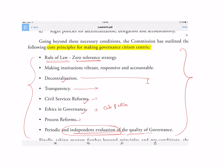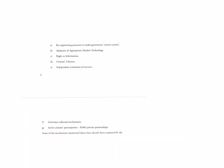Remember this framework: rule of law, zero-tolerant strategy, make institutions vibrant, responsive and accountable, decentralization, transparency, reforms, ethics, process reforms, and periodic and independent evaluation. Any question that comes to you with regard to good governance, participation, and anything - just remember this framework and you can present the answer. The practical applications include: business process re-engineering, adopting modern technology, civil services reform, right to information and transparency, citizen charters and accountability, independent evaluation of services, grievance redressal mechanism, active citizen participation, and public-private partnerships.